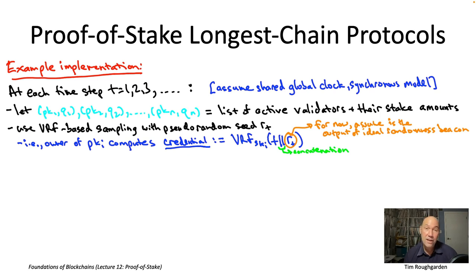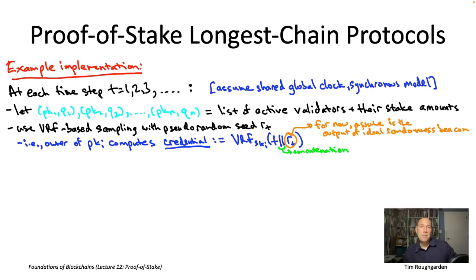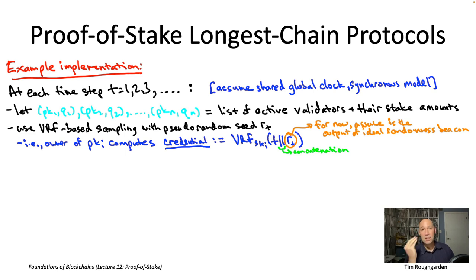As we talk through the complications of VRF-based sampling in the next couple of videos, it's worth keeping in mind why we might want to use VRFs as opposed to some simpler approach to proof-of-stake Sybil resistance — which is the secrecy property you get from VRFs. For example, if you did something much simpler like weighted round robin, you'd have the drawback that everybody knows the future block proposers well in advance, making those proposers subject to coercion, bribery, or denial-of-service attacks. VRFs recreate the proof-of-work property that nobody knows you're a block proposer until they actually see your block.